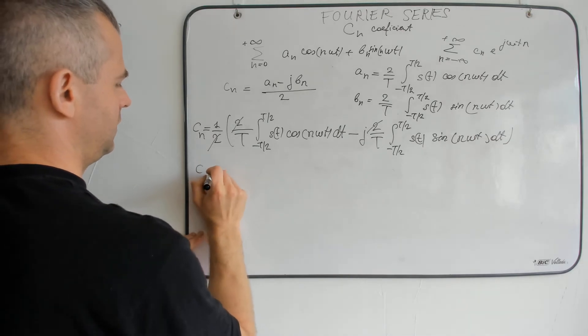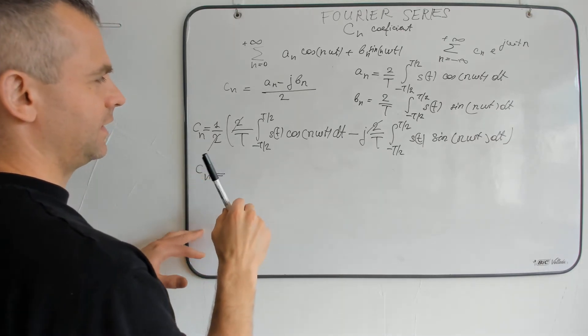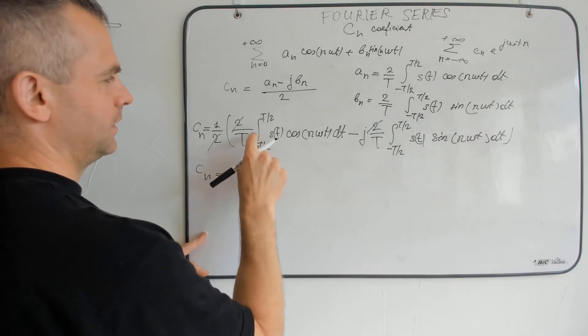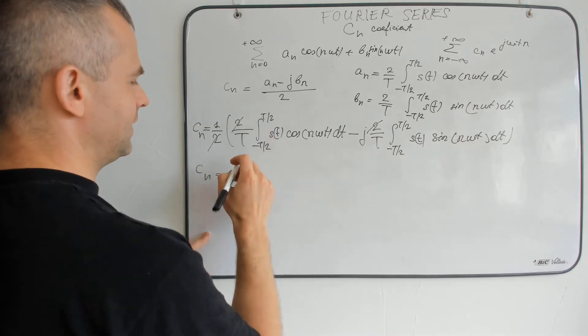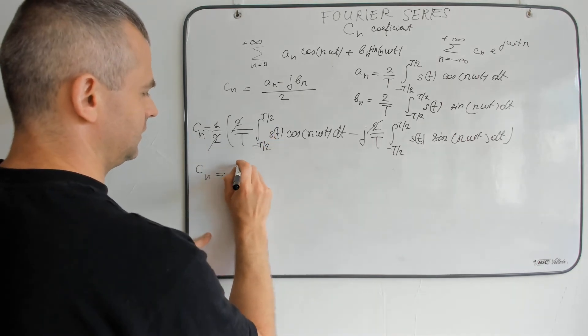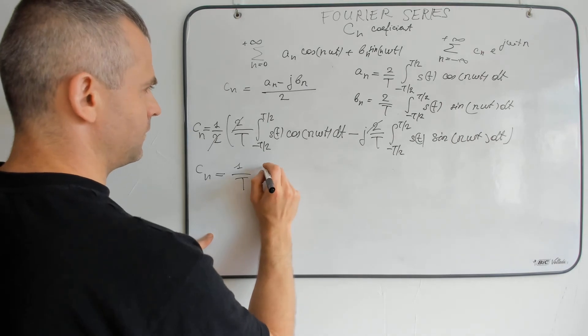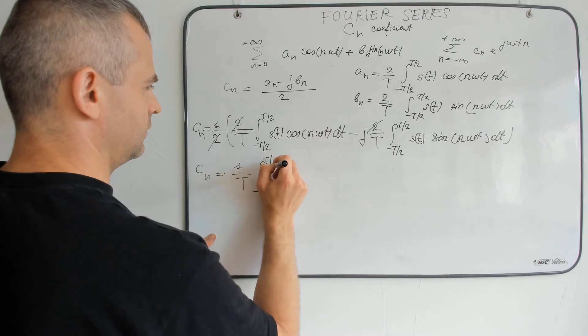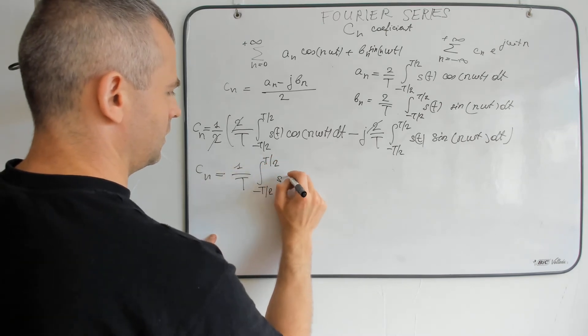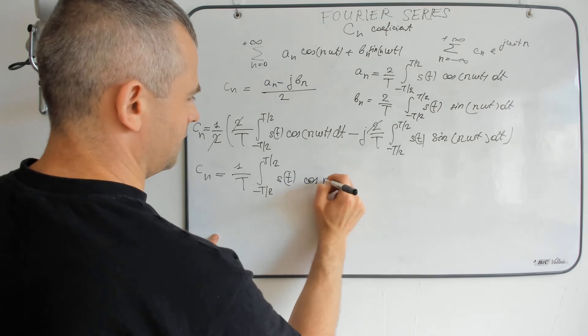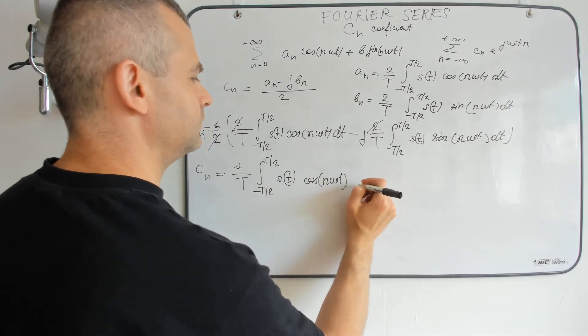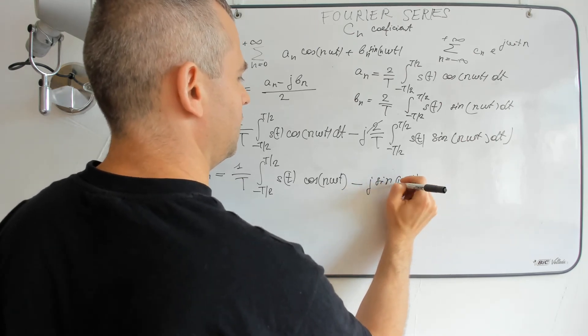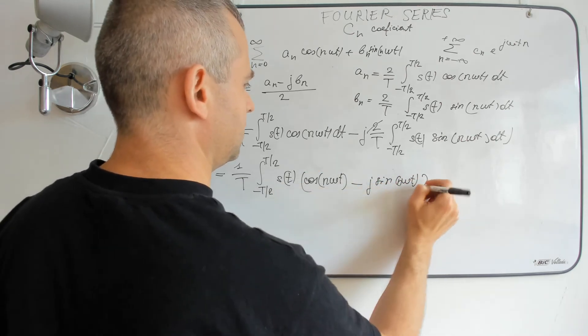And we can factor this as 1 divided by T times the integral of s(t) times the combination of cos(n omega t) and sin(n omega t) terms dt.